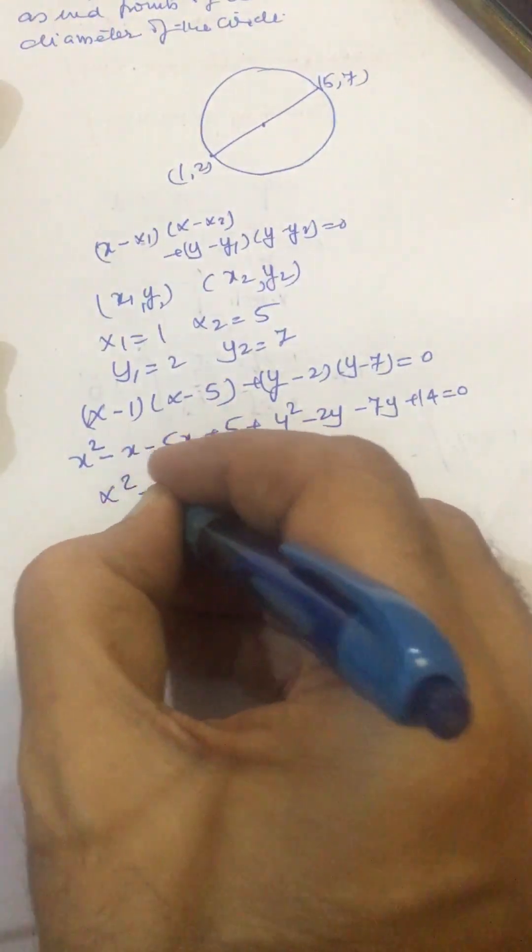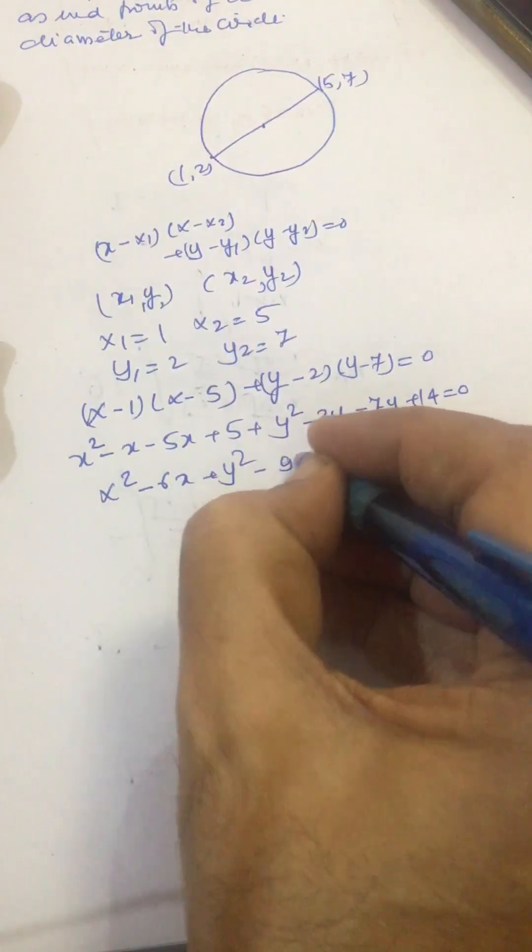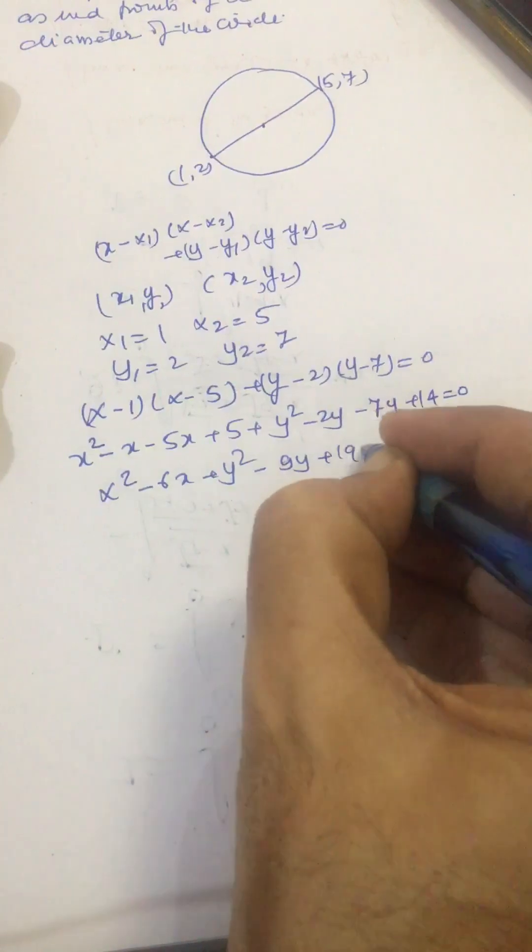Or we can write like this: x² - 6x + y² - 9y + 19 = 0.